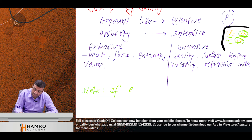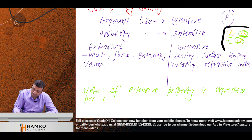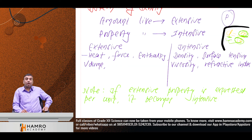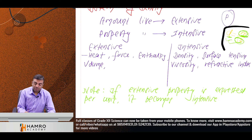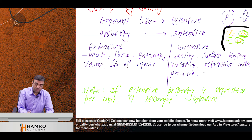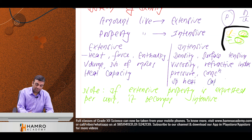Note: if an extensive property is expressed per unit, it becomes intensive. For example, number of moles per unit volume gives molarity. In physics, heat capacity is extensive, but specific heat capacity is intensive.